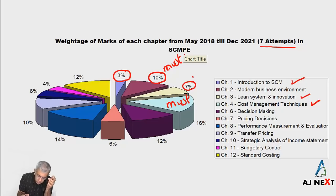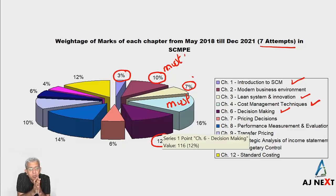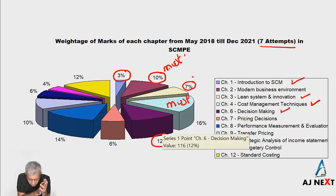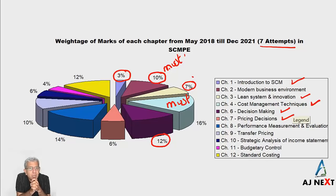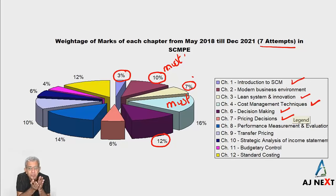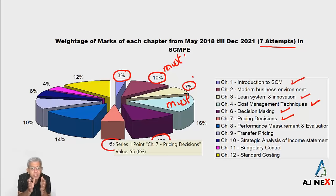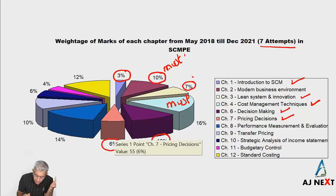Chapter 5 has been deleted by ICAI, so let's not talk about that. Decision making is approximately asked for 12% of marks — so around 12 marks out of 100 are reserved for that. Pricing decisions: in one or two attempts, particularly May 2019, it was asked for a lot of marks, but after that the weightage has slightly gone down. On average it is approximately 6%.